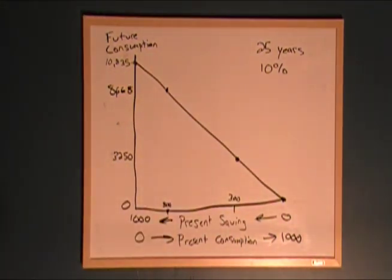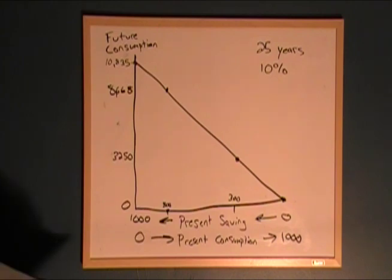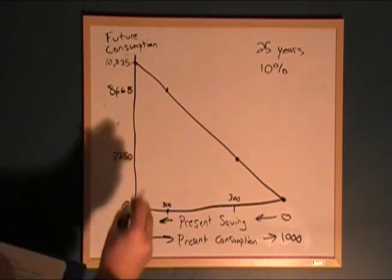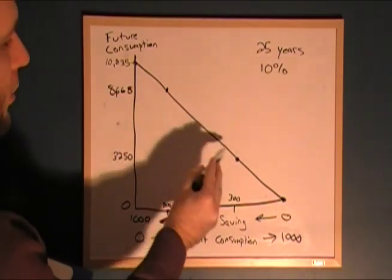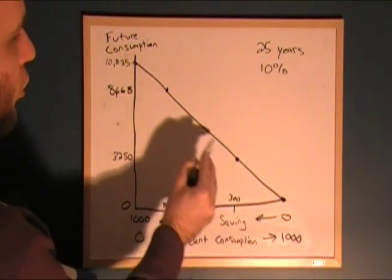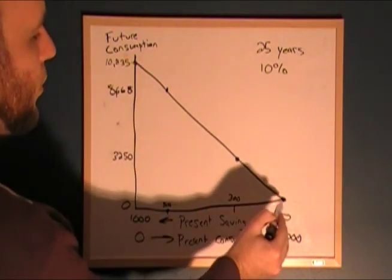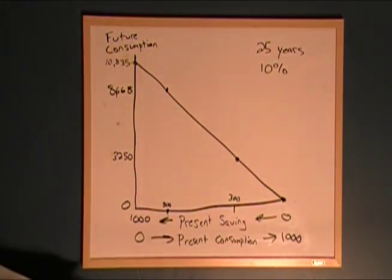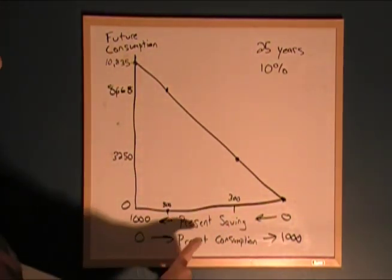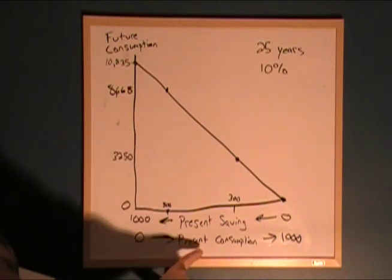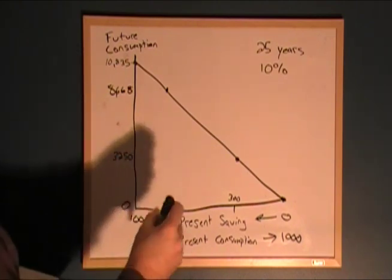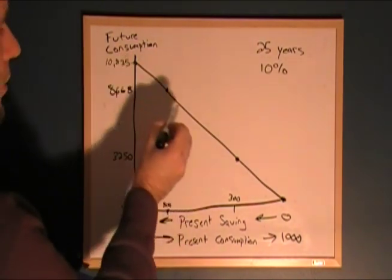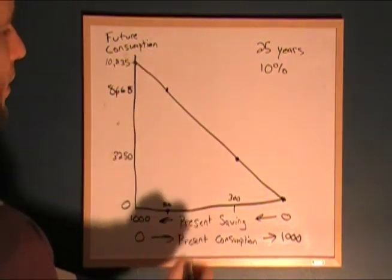These are two points on our budget constraint, so now we can see what our different choices are — what's available to us. We're going to try to consume somewhere on this budget constraint. This is where we're going to have our mix between present savings and present consumption and future consumption.